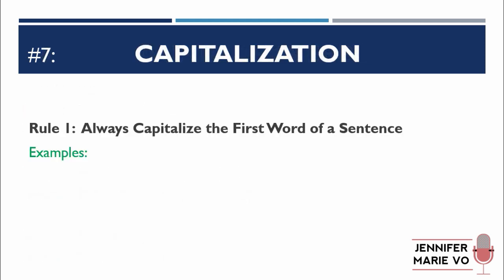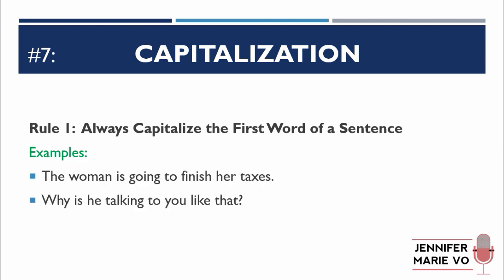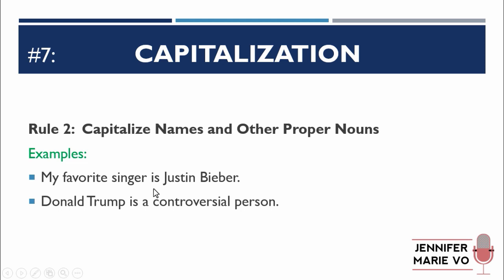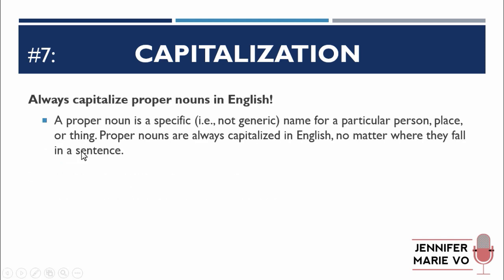Now capitalization. Rule number one: always capitalize the first word of a sentence. "The woman is going to finish her taxes." "Why is he talking to you like that?" You always start with a capital. Rule number two: capitalize names and other proper nouns. "My favorite singer is Justin Bieber" — capitalize Justin Bieber. "Donald Trump is a controversial person" — capitalize Donald and Trump because it's a name. A proper noun is a specific name for a particular person, place, or thing. Proper nouns are always capitalized in English, no matter where they fall in a sentence.